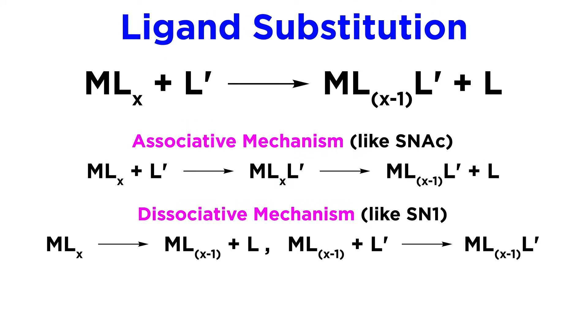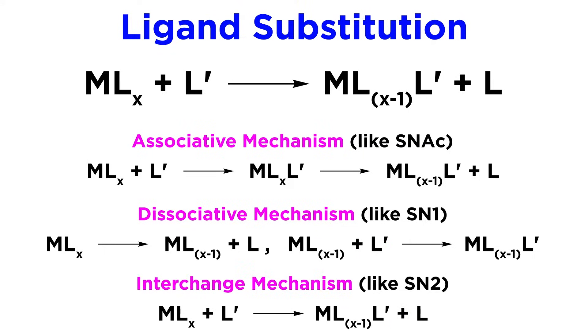It can also be a dissociative process, which is sort of SN1-like. A ligand leaves, and then some other ligand joins the complex. Or, it can be like an SN2 reaction, with a new ligand coordinating simultaneously to another ligand leaving, which we can call an interchange reaction.